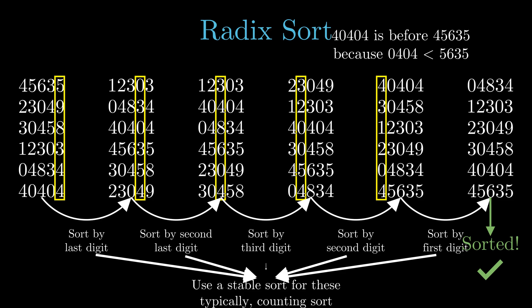Now, when sorting by the first digit, it is important that 40404 remains before 45635 and this can be ensured only by stable sorting algorithms.